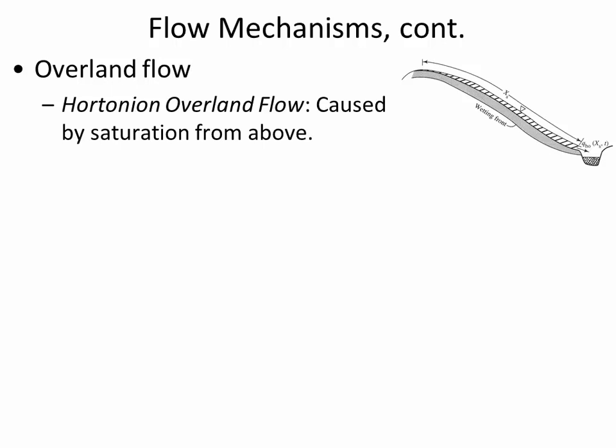We didn't get to these slides last time, so let's take a quick look at them before we start talking about hydrographs. There are a couple of different overland flow types depending on where the water is coming from. Hortonian overland flow is caused when there is saturation at the ground level, so the infiltration rate is exceeded.